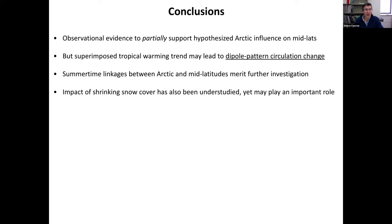To wrap up: there is partial observational evidence to support the hypothesized Arctic influence on mid-latitudes, specifically a weaker, wavier circulation. But other factors such as superimposed tropical warming are more likely to cause a complex dipole pattern of circulation changes. Summertime linkages between the Arctic and mid-latitudes have been understudied and merit further investigation, and the impact of shrinking snow cover could be playing an important role particularly in the summertime response.